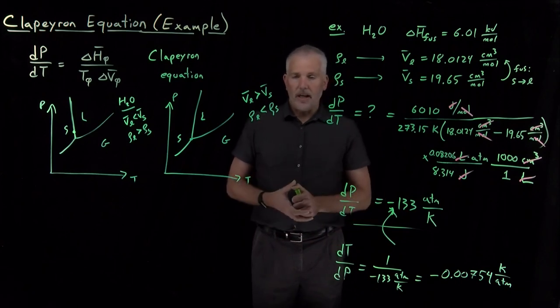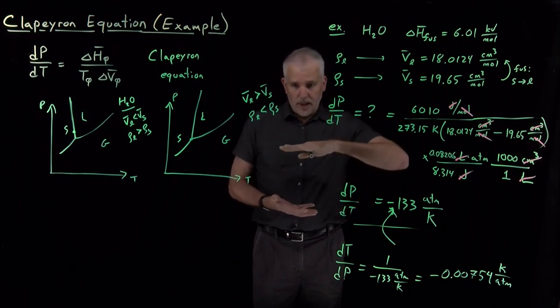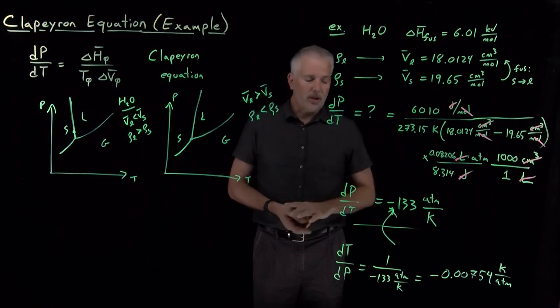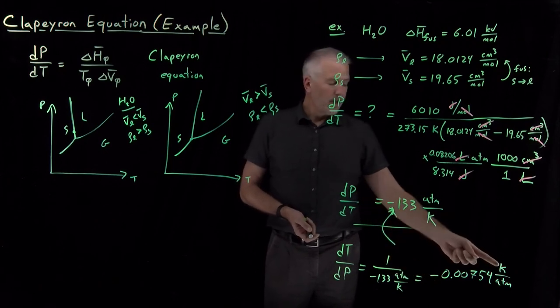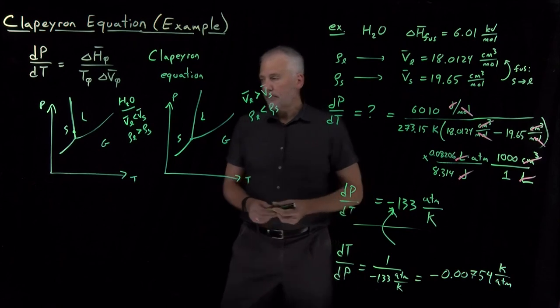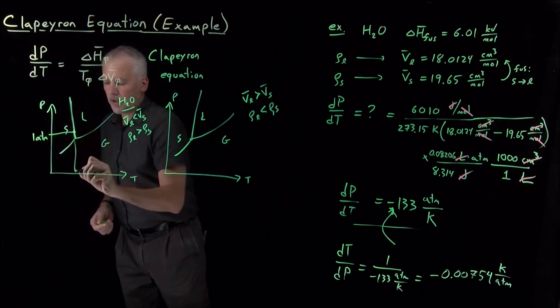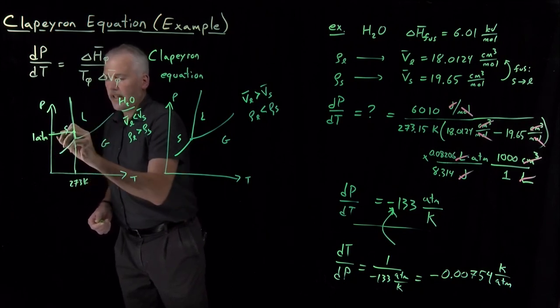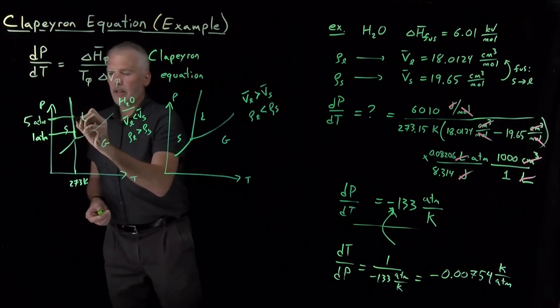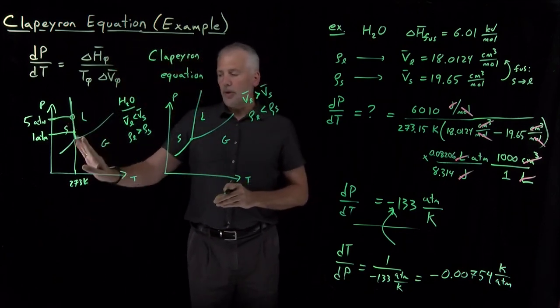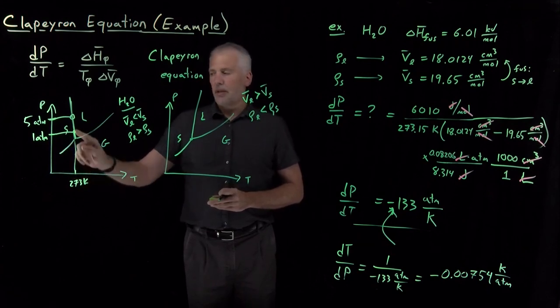Instead of melting ice at ambient pressure, one atmosphere, if I were to melt that same ice by exerting two atmospheres of pressure on it, or ten atmospheres of pressure on it, if I increase the pressure by a few atmospheres, I'm going to decrease, because of the negative sign, the melting point by a few hundredths of a kelvin. Instead of melting at one atmosphere and the normal melting point, if I increase the pressure to a larger pressure, the melting point will have shifted slightly negative. It'll be a few hundredths of a degree less than 273 kelvin. We can decrease the melting point of ice by exerting pressure on it.